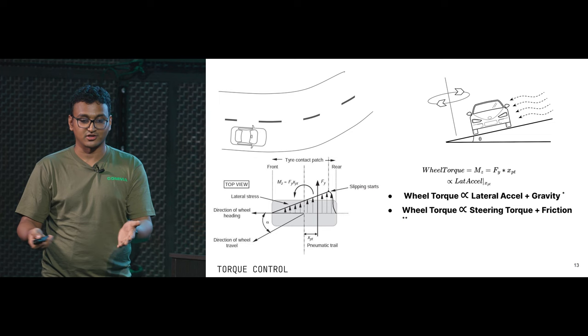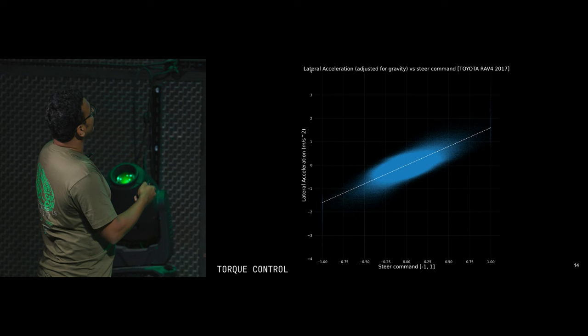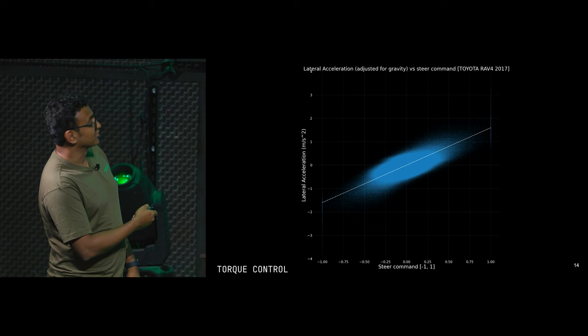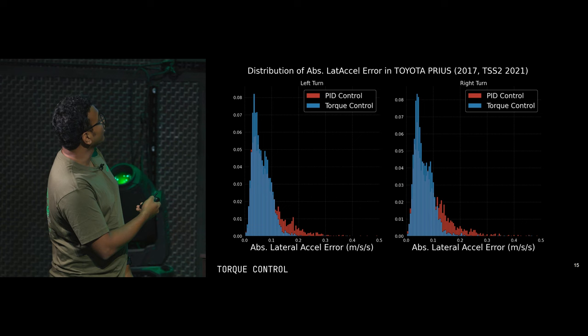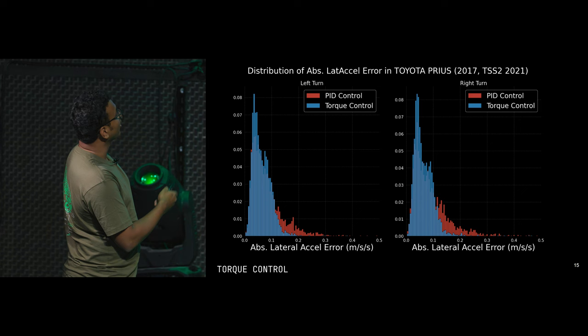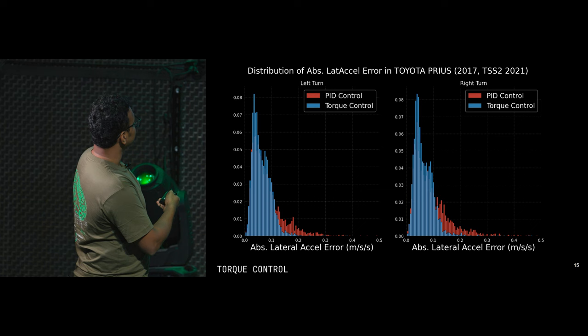We can find one value for each platform and everything is good. We implemented this — you can see the lateral acceleration desired versus the steering command we send to the car for a Toyota RAV4, and this looks pretty linear. This is what we implemented in 0.8.15 as torque control. The result: using the same absolute lateral acceleration error metric for the Toyota Prius, torque control was much better than the simple PID tuned directly on the steering angle. Higher errors lead to other undesirable things like ping-ponging, wandering in the lane, and other effects we don't want.